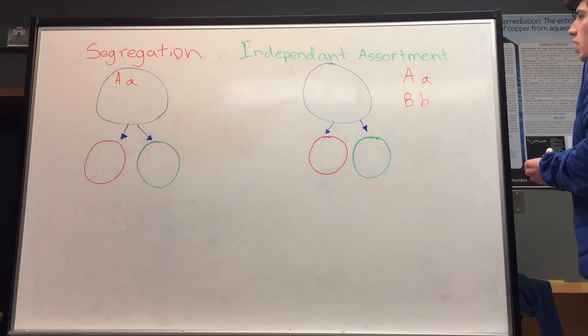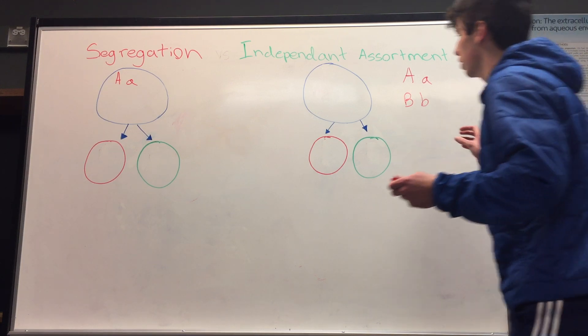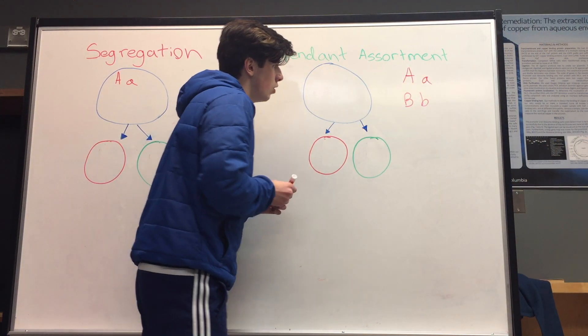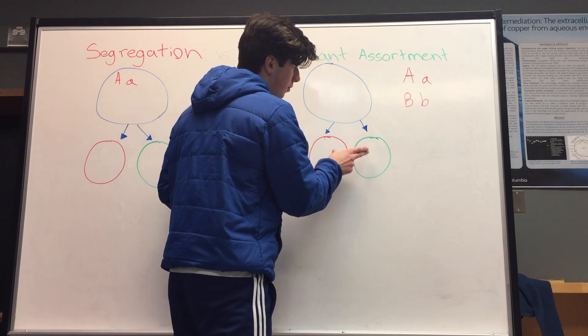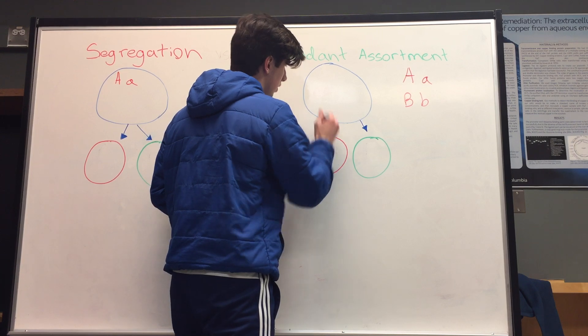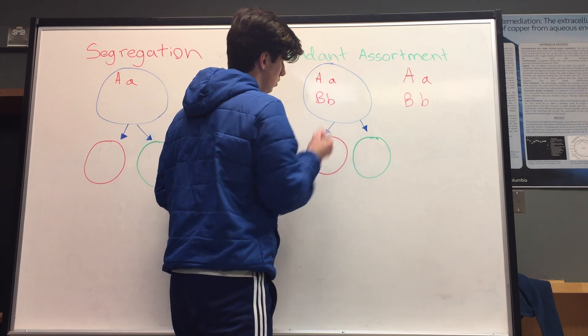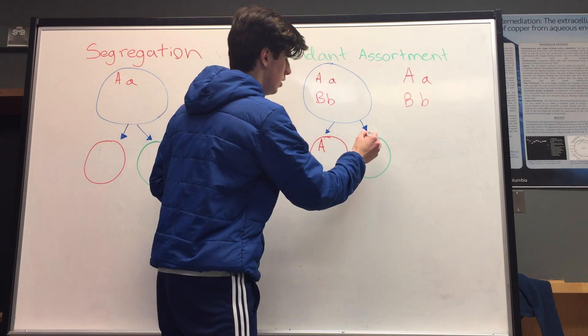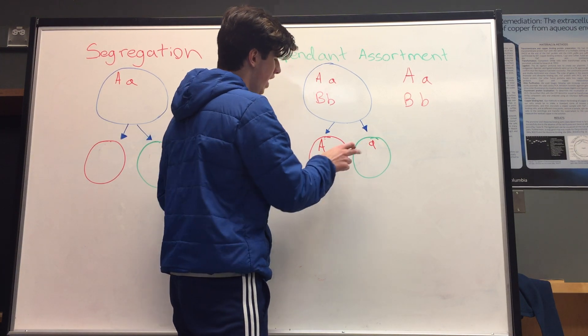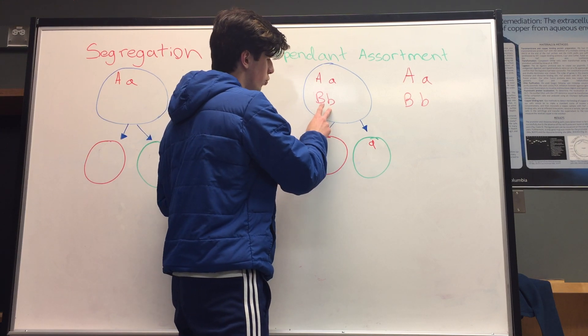So during meiosis when the gametes are being formed, big A is going to go into one of the gametes—let's say we started off like this—big A is going to go into one, little a into another, but whatever way big A goes has no effect on which way big B or little b go.